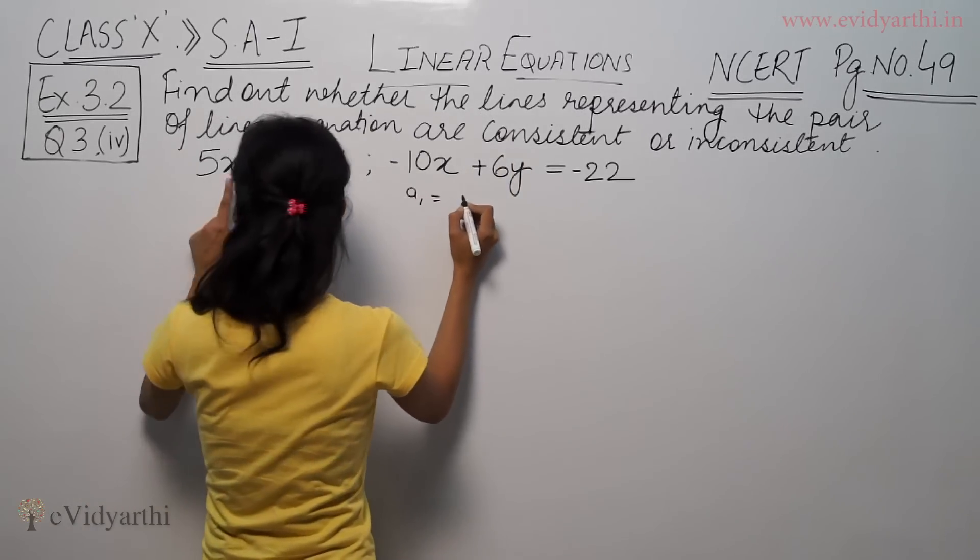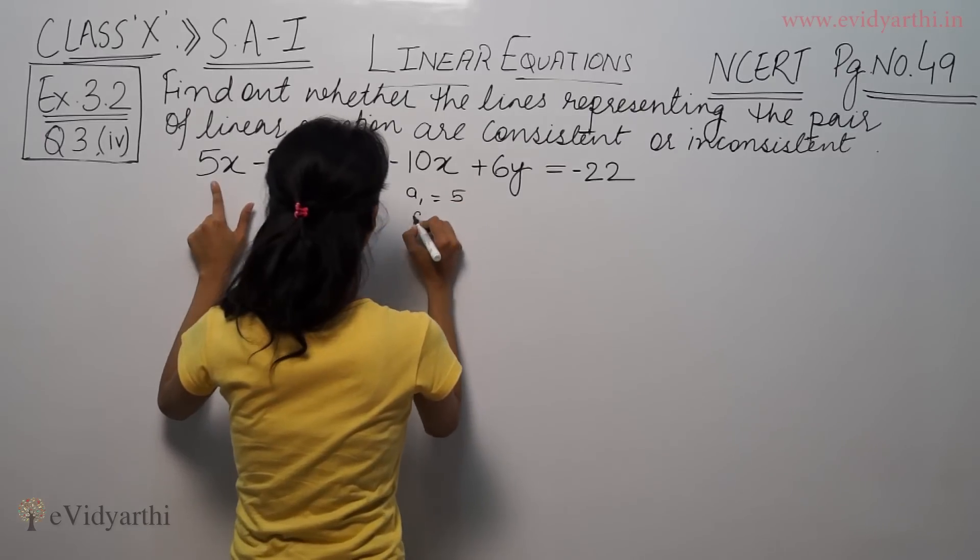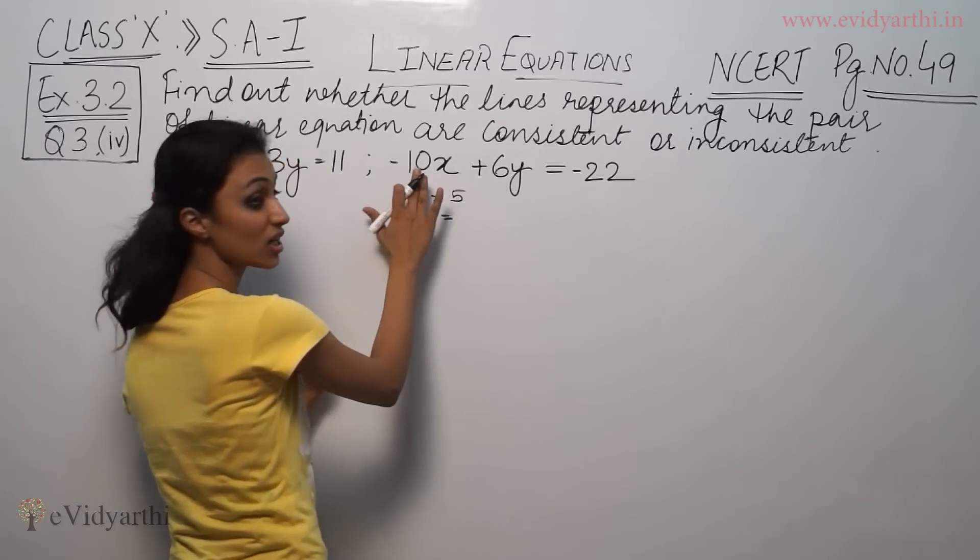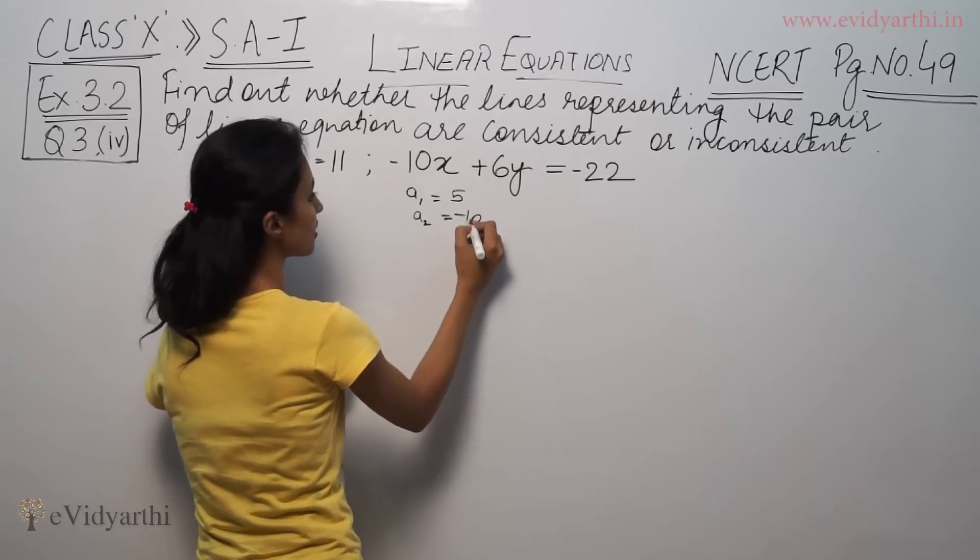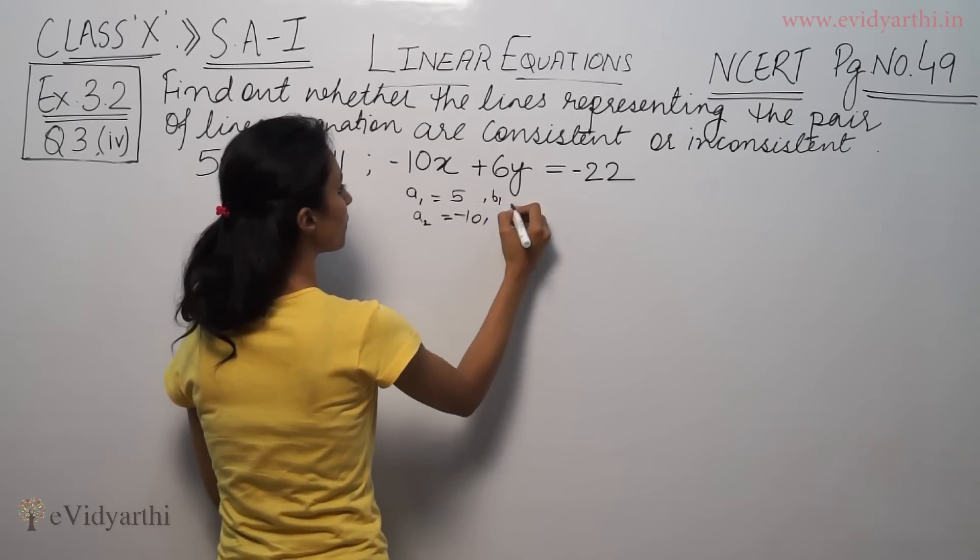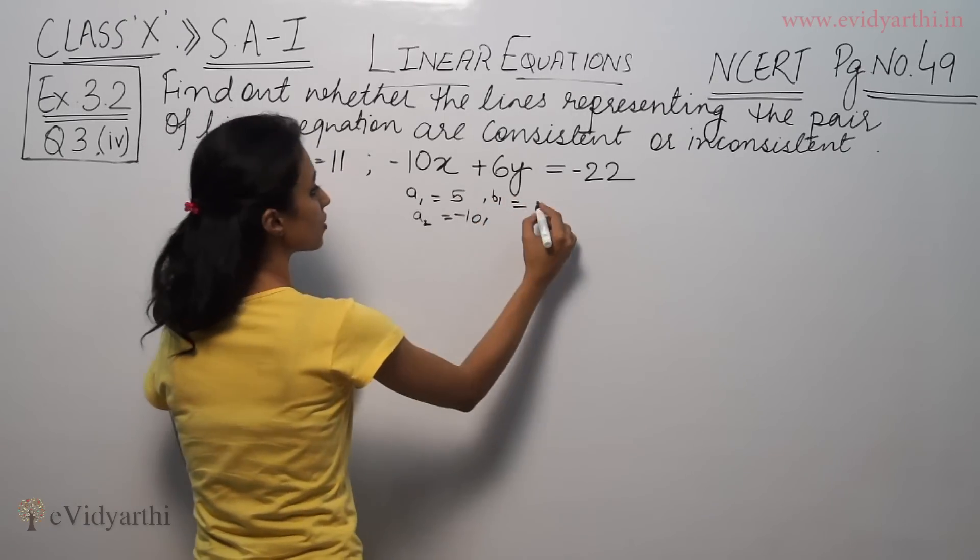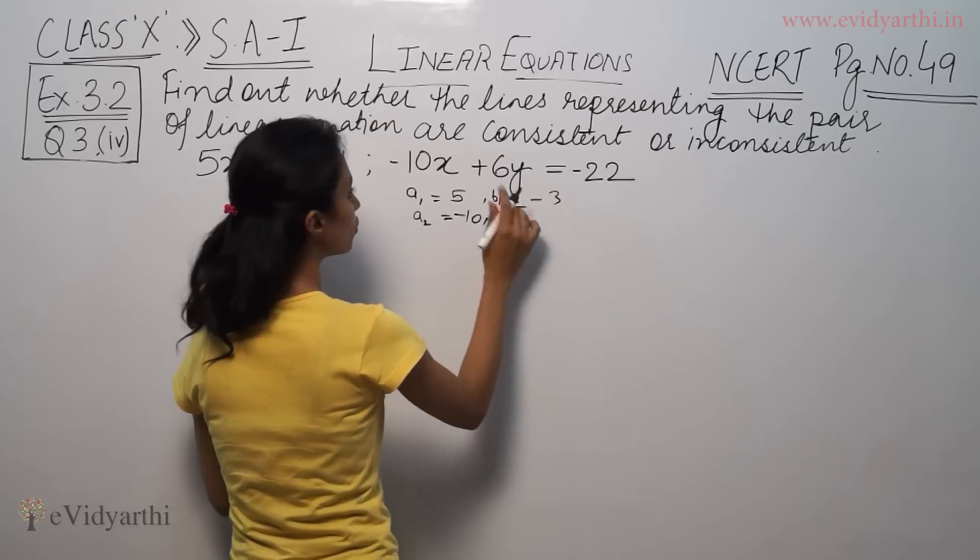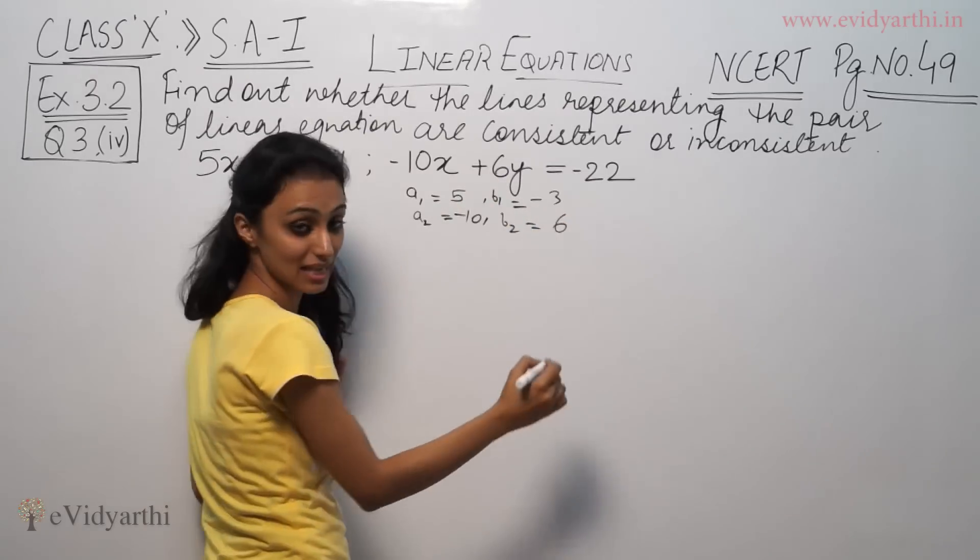So first, we have a1 given x coefficient 5, a2 given x coefficient minus 10, b1 given y coefficient minus 3, b2 given y coefficient 6.